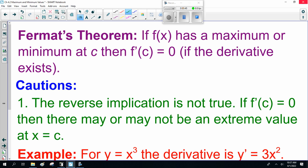Now, this leads up to Fermat's theorem. If f(x) has a maximum or minimum at some point c, then f'(c) = 0, if the derivative exists.